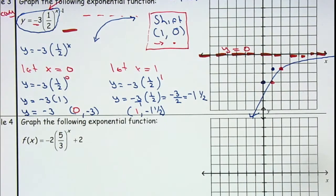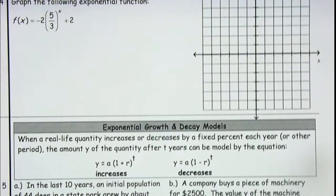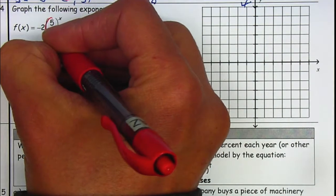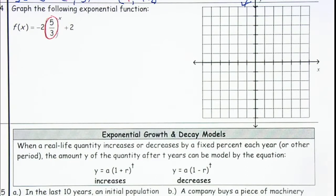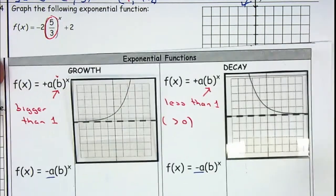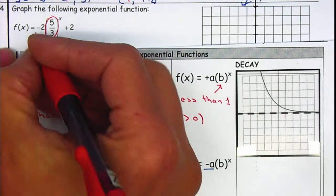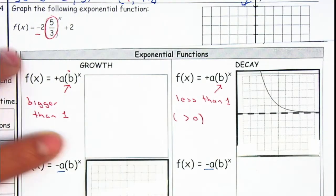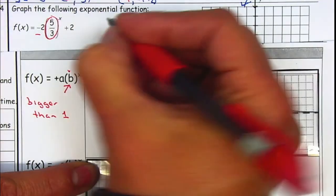Let's work on the next example — example number four. Graph the following exponential function. First, we need to decide if this is an exponential growth or decay. Now look at this number — is that bigger than one or less than one? It's bigger than one, so this is going to be an exponential growth. Now, because the number on the front is negative, you will have to get it flipped. Let's go make a little sketch.